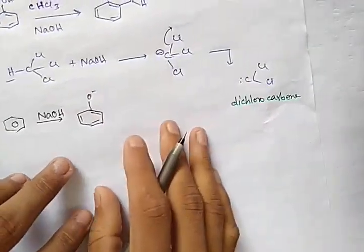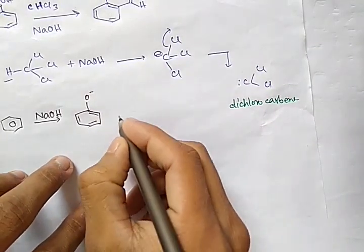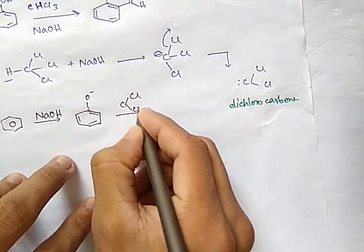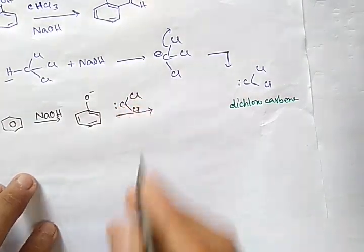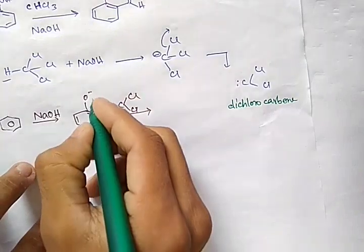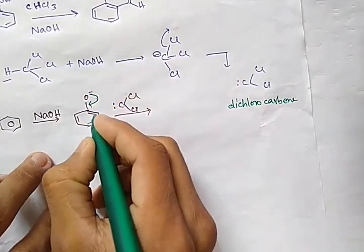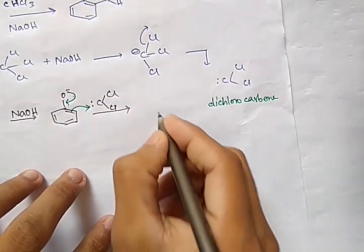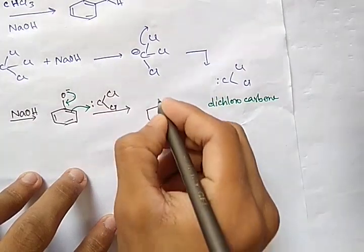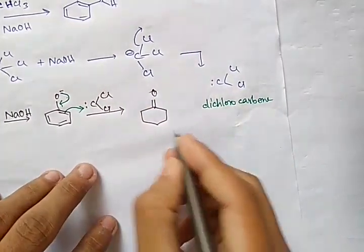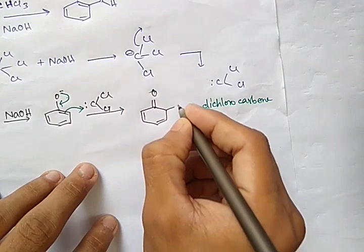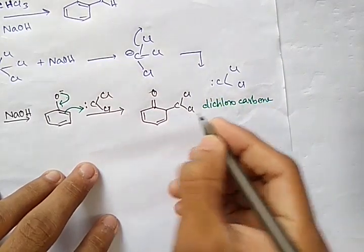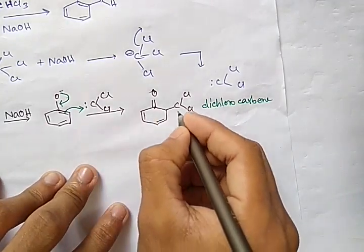The negatively charged phenoxide ion is attacked by the dichlorocarbene species. The negative charge on oxygen attacks the carbene, so the carbene inserts into the ring system. We get an intermediate where the carbon is bonded to oxygen and has a CCl₂ group attached, with a negative charge.